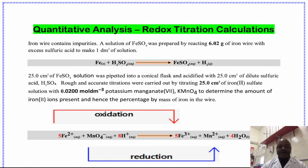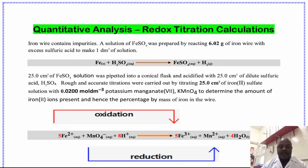The equation for the reaction is: Fe²⁺ plus MnO₄⁻ plus acid gives Fe³⁺ plus Mn²⁺ plus a molecule of water. There is oxidation and reduction taking place simultaneously.